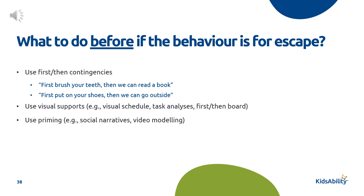It may also be helpful to use priming — a fancy word for telling the child what to expect or giving them a warning. You can find social narratives or video modeling on our website, or you can search on YouTube — for example, 'what to expect at swimming lessons' or 'how to behave at camp.' This will provide more predictability and get the child ready for what is to come.